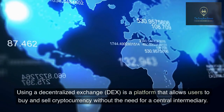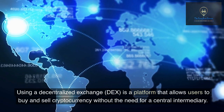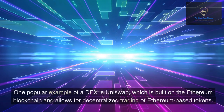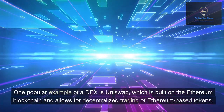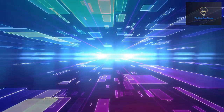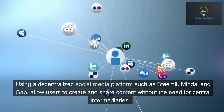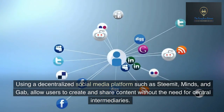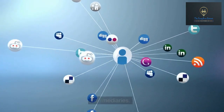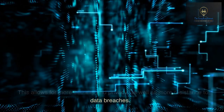Using a decentralized exchange, or DEX, is a platform that allows users to buy and sell cryptocurrency without the need for a central intermediary. One popular example of a DEX is Uniswap, which is built on the Ethereum blockchain and allows for decentralized trading of Ethereum-based tokens. Using a decentralized social media platform such as Steemit allows users to create and share content without the need for central intermediaries, offering more security, privacy, and resistance to data breaches.